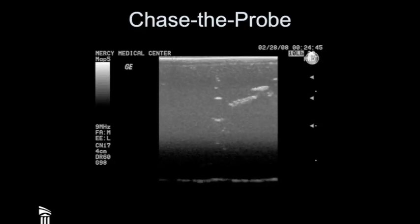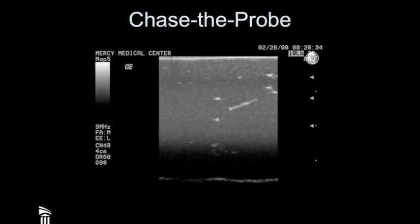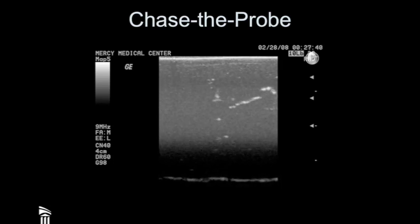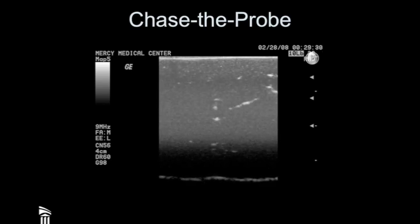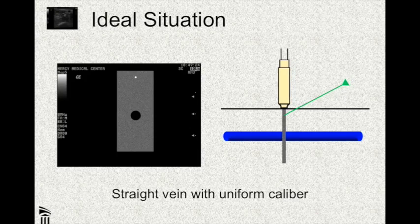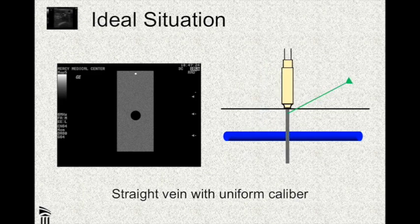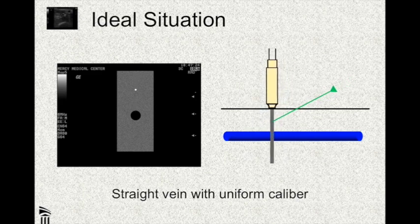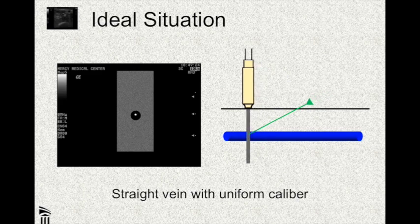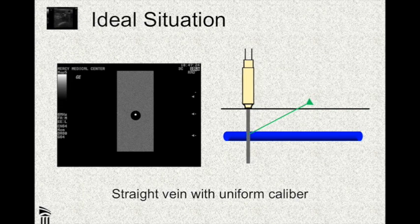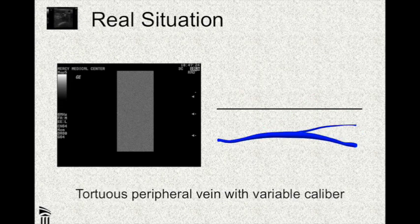This is what chase the probe looks like in the gel model — you can see the needle appear and disappear stepwise as it gets closer and closer to the blood vessel. Once you get good at this, you can move them almost continuously and make it look nice and smooth. This is with an idealized blood vessel. Unfortunately, a lot of blood vessels are not straight with uniform caliber — they're more ugly looking like this.